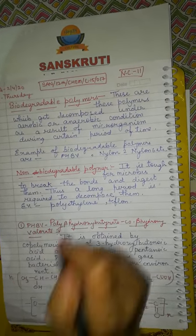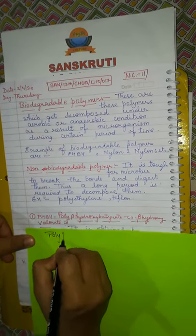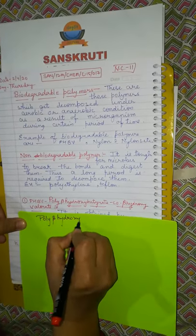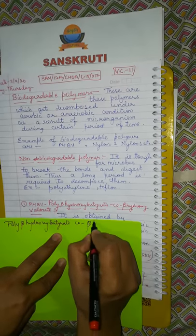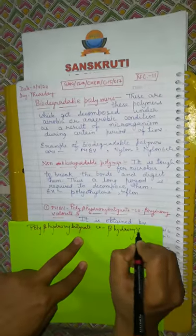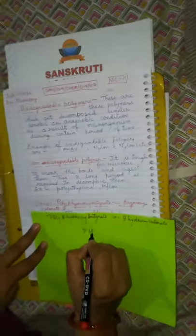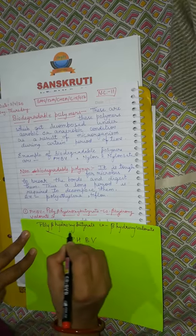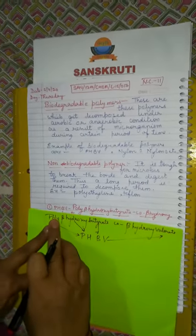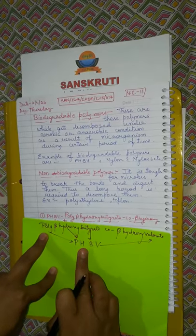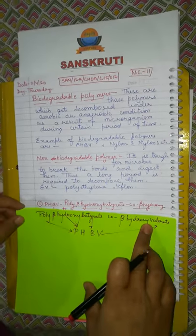What is PHBV? It is a biodegradable polymer. Let's look at what its actual full name is: poly-beta-hydroxybutyrate-co-beta-hydroxyvalerate. P stands for poly, H stands for hydroxy, B stands for butyrate, and V stands for valerate.